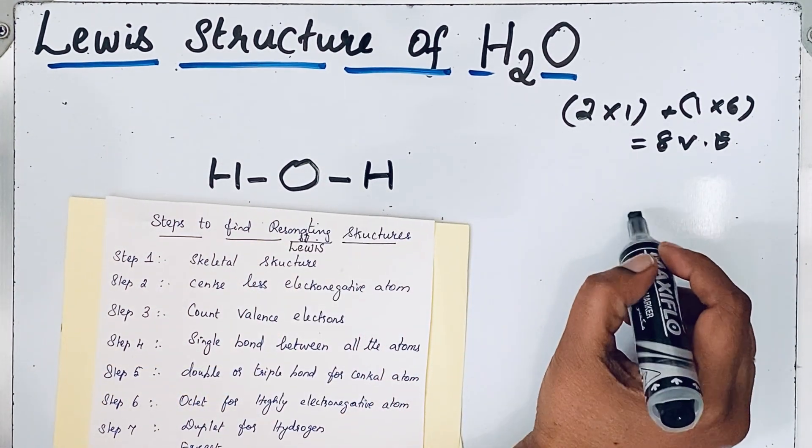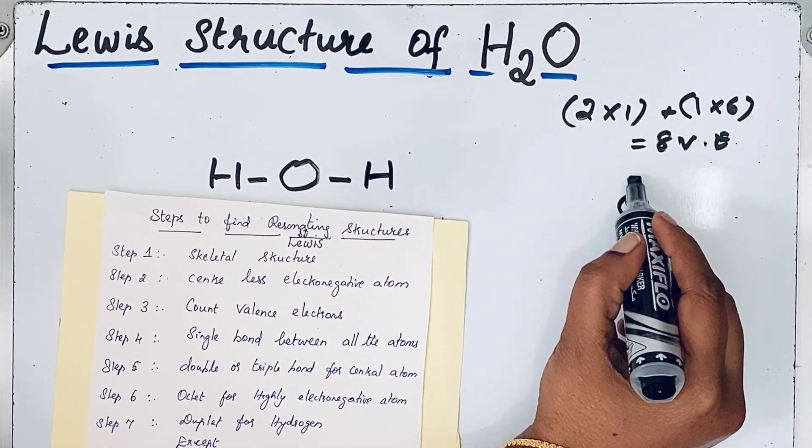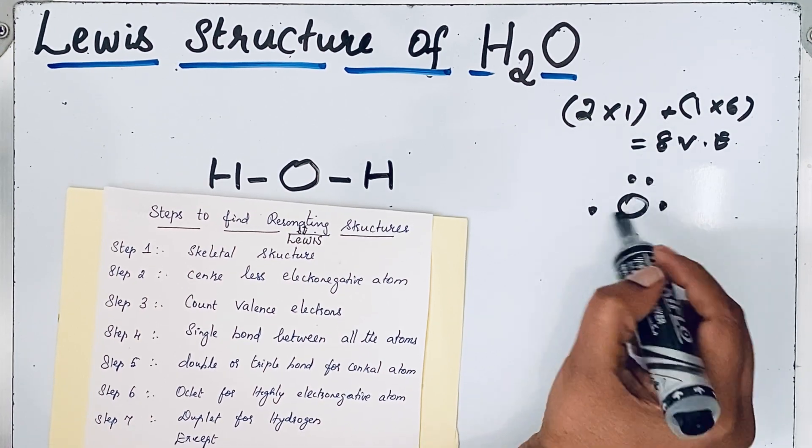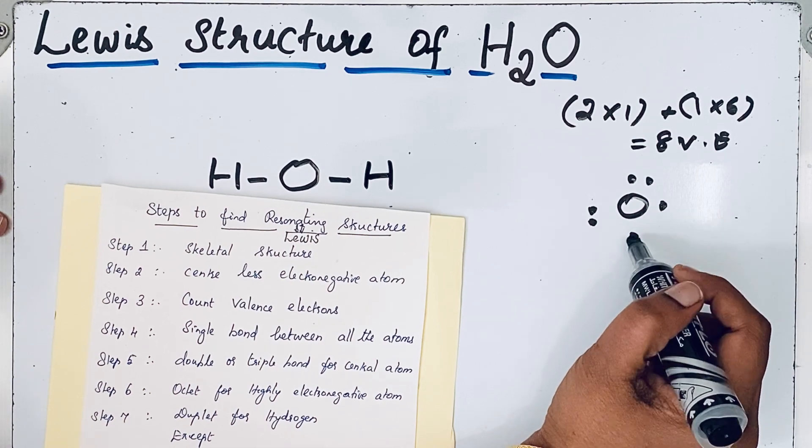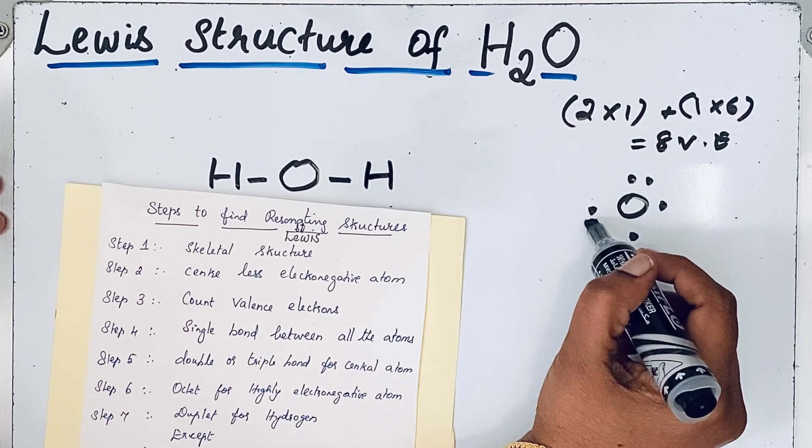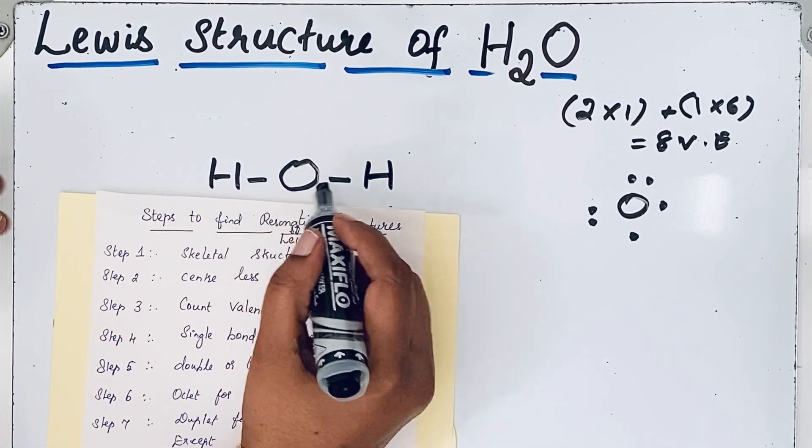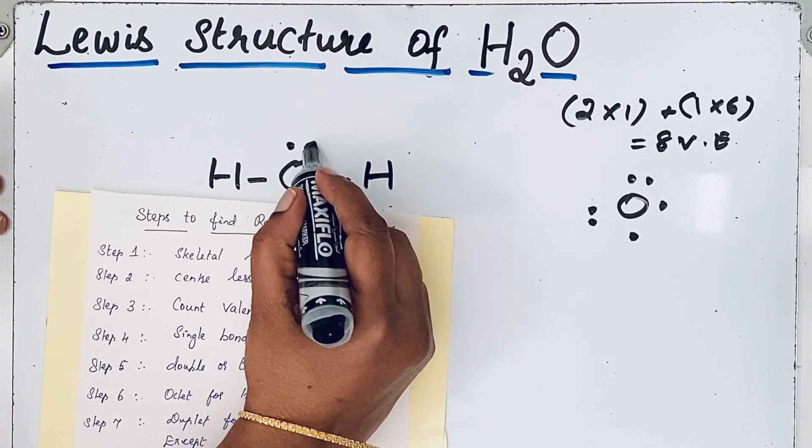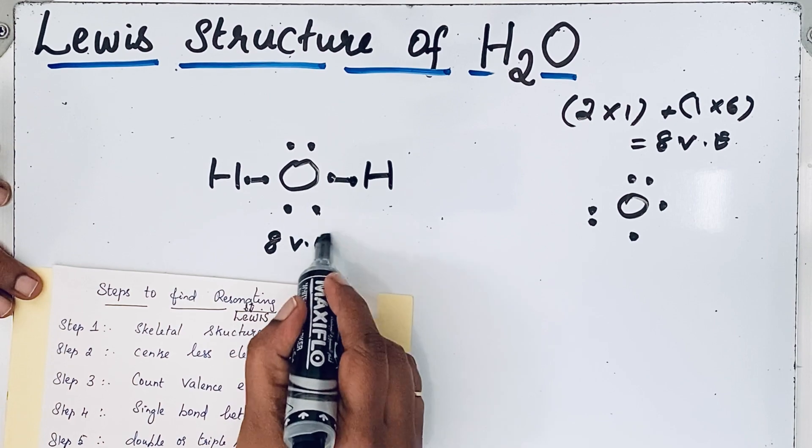If you look at oxygen's electron dot structure, it has six valence electrons: one, two, three, four, five, six. This means oxygen has two unpaired electrons and two pairs of electrons. The two unpaired electrons can form bonds. We write the two electron pairs so that eight valence electrons are present.